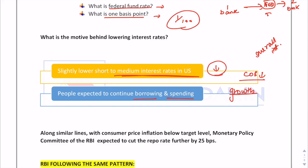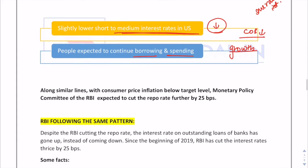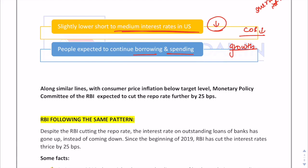On similar lines, because consumer price inflation is below the target level in India, this was an advantage for RBI to reduce its repo rate also. Since the beginning of 2019, RBI has cut its interest rates thrice by 25 bps each, and currently it stands at 5.75 percent. RBI is also expected to cut the repo rate further by 25 bps, bringing it to 5.5 percent.